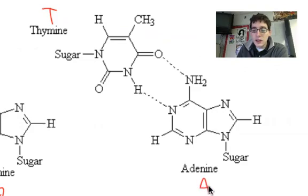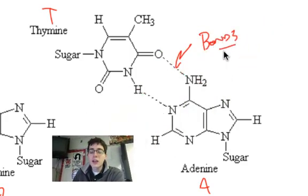Thymine and adenine, on the other hand, A and T, these guys only need two bonds, and these dotted lines here, these are bonds, and these are the attractions that hold the base pairs together to keep the DNA as a double strand.